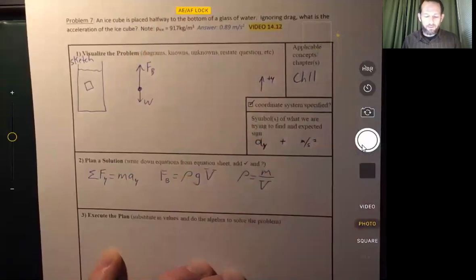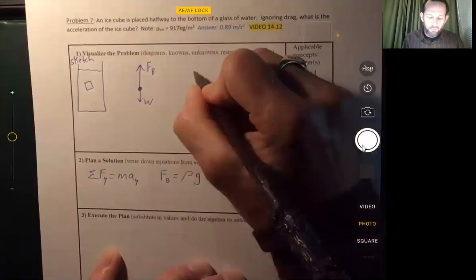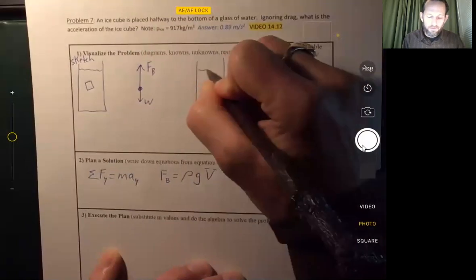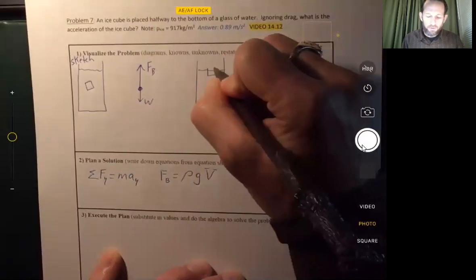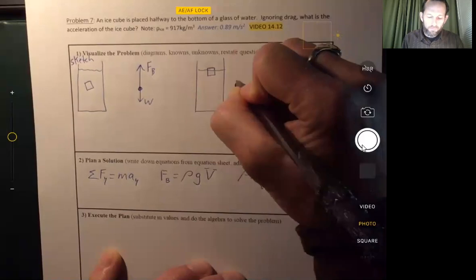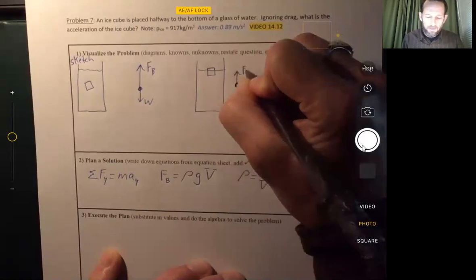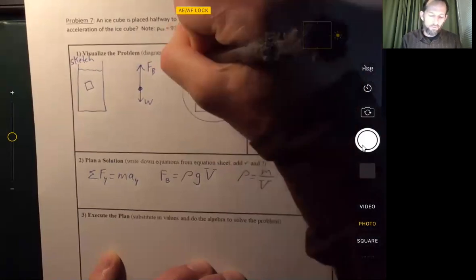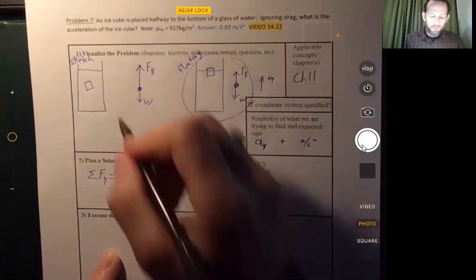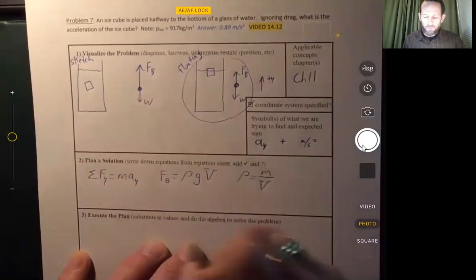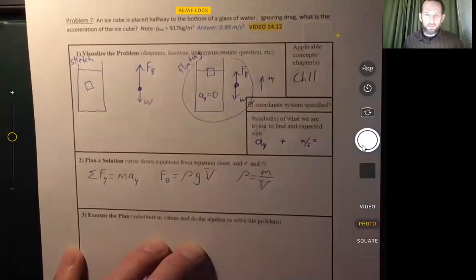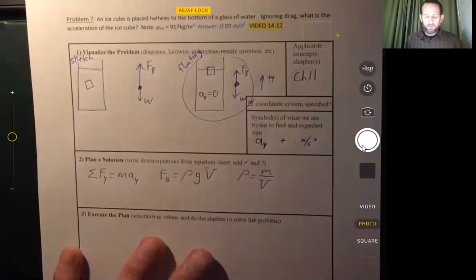Once it gets to the surface, if we just draw another one, when it gets to the surface, some of the ice cube is going to be out of the water. At that point, then the buoyant force is going to be equal to the weight. That is for the floating case. We're analyzing this case. It's going to have a positive acceleration. Of course, where it's floating, that would have an acceleration of zero. Here, we have an acceleration upward.